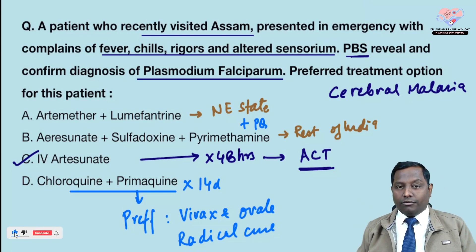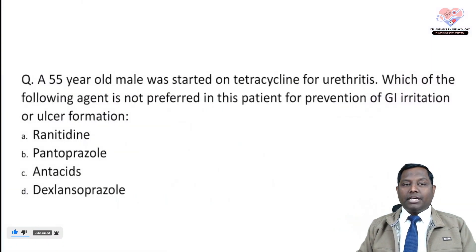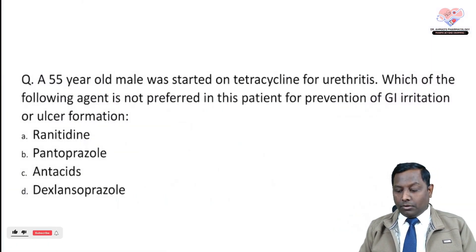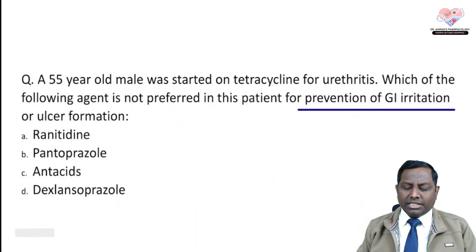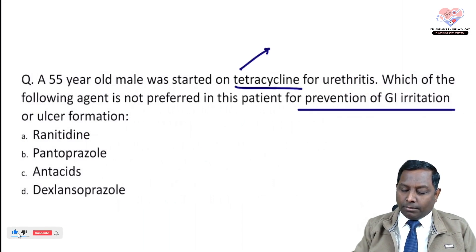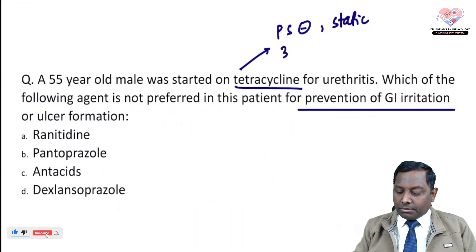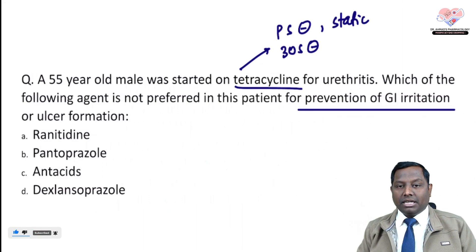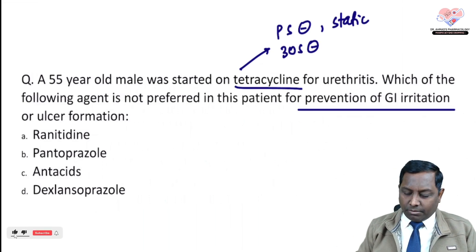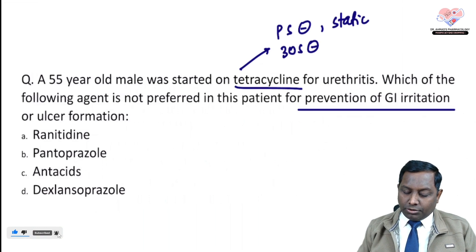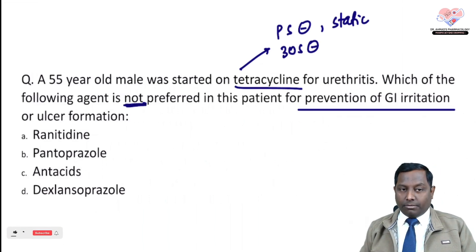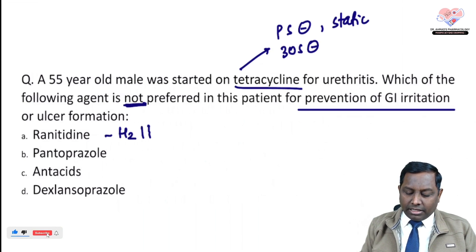The next question is about a 55-year-old male started on tetracycline for urethritis. Which of the following is NOT preferred for prevention of GI irritation? Tetracycline is a protein synthesis inhibitor — a bacteriostatic drug that targets the 30S ribosome unit. It can cause GI irritation. Ranitidine, an H2 blocker, can be used; pantoprazole and dexlansoprazole, both proton pump inhibitors, can also be given.